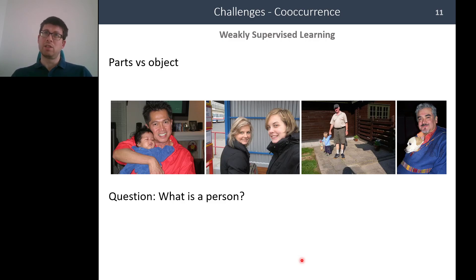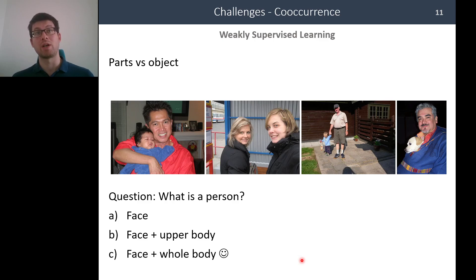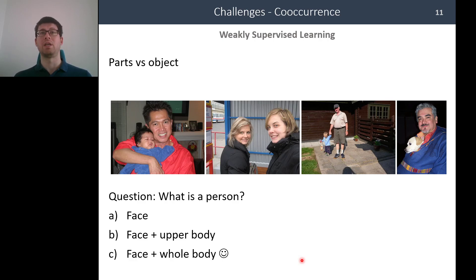More specific challenges for weakly supervised learning are illustrated here. These images are labeled with the 'person' class in Pascal VOC. But when you want to define what is a 'person,' it is quite ambiguous in the weakly supervised setting — you might think the common element across all these images is the face and upper body.